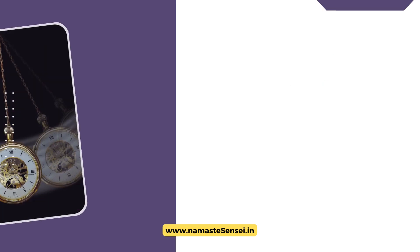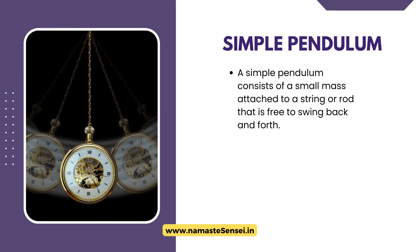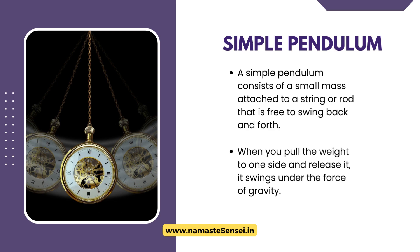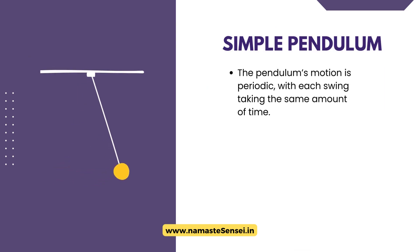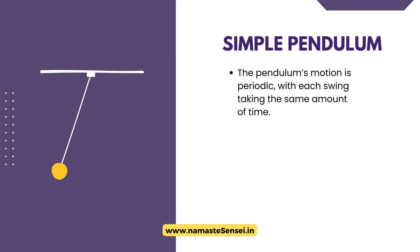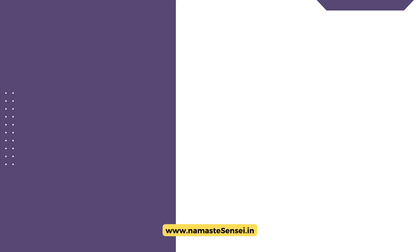First, Simple Pendulum. A simple pendulum consists of a small mass attached to a string or rod that is free to swing back and forth. When you pull the weight to one side and release it, it swings under the force of gravity. The pendulum's motion is periodic, with each swing taking the same amount of time.